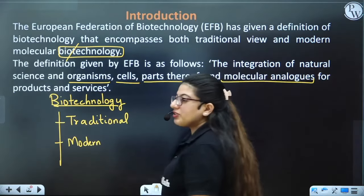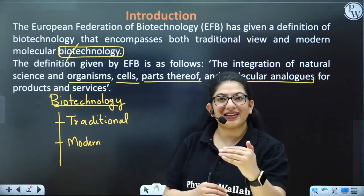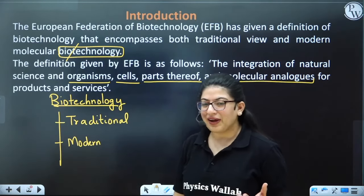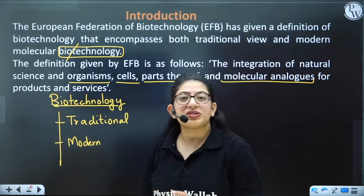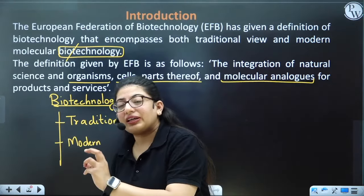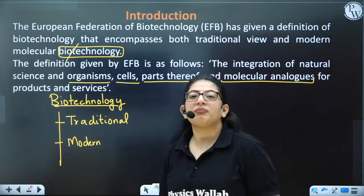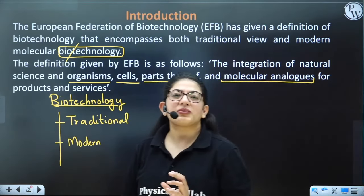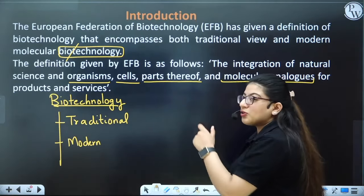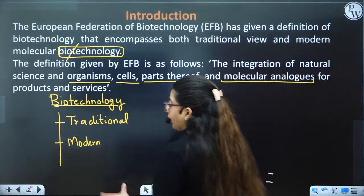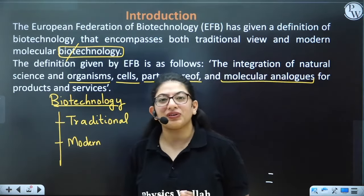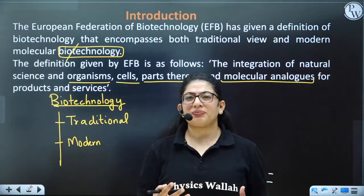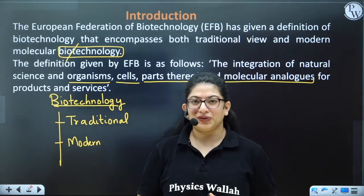Modern biotechnology is a step ahead of traditional. Curd is also produced in factories at a larger scale, where they carefully choose what type of bacteria to use, whether the culture is acidic or alkaline, and control quality. Similarly, alcohol produced in large barrels in industries is modern biotechnology. Both perform the same function, so they are both part of biotechnology.